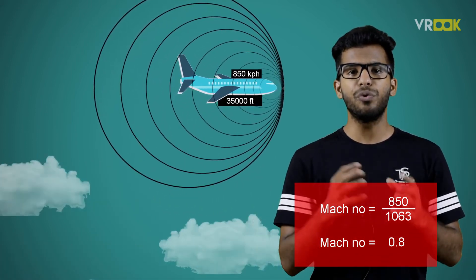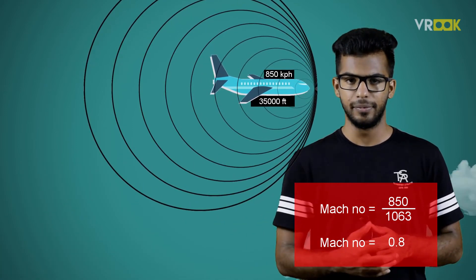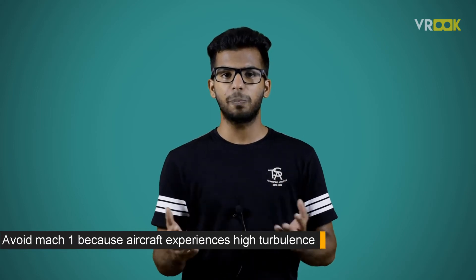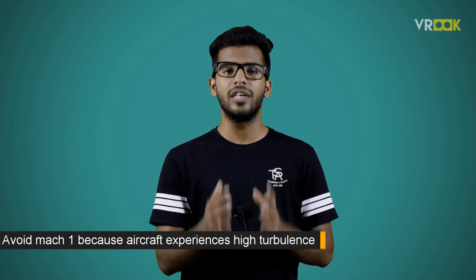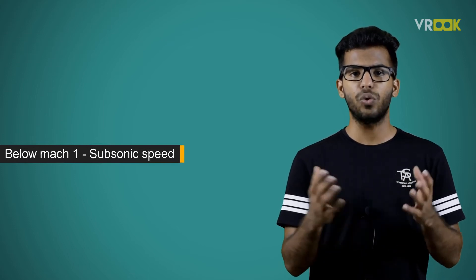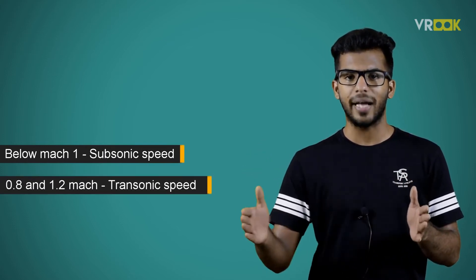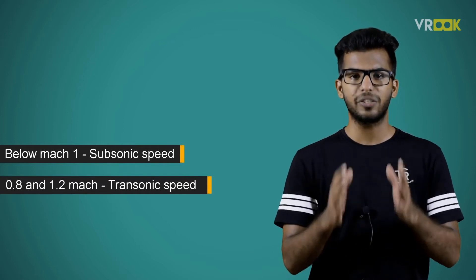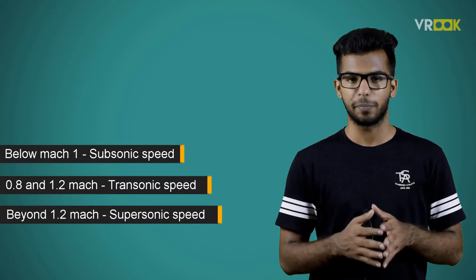So commercial flights travel at Mach 0.8 speed. Most aircraft tend to avoid Mach 1 speed because the aircraft experiences high turbulence and will be difficult to control near that speed. Anything below Mach 1 is called subsonic speed. Between 0.8 and 1.2 Mach it is called transonic speed, and beyond 1.2 Mach is called supersonic speed.